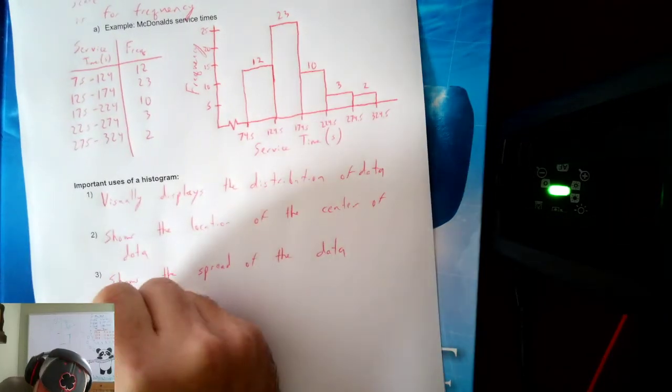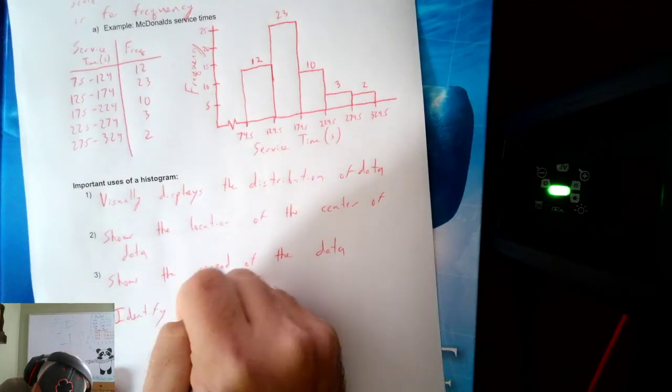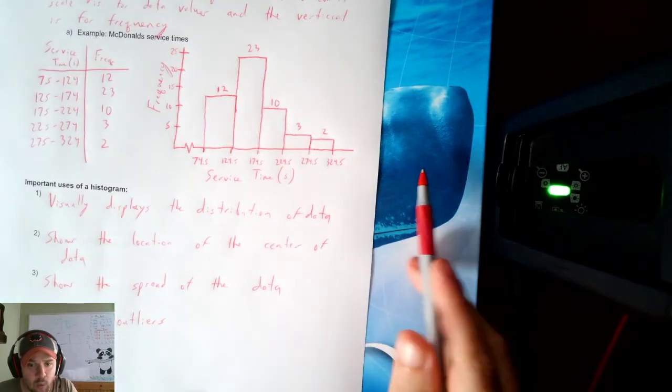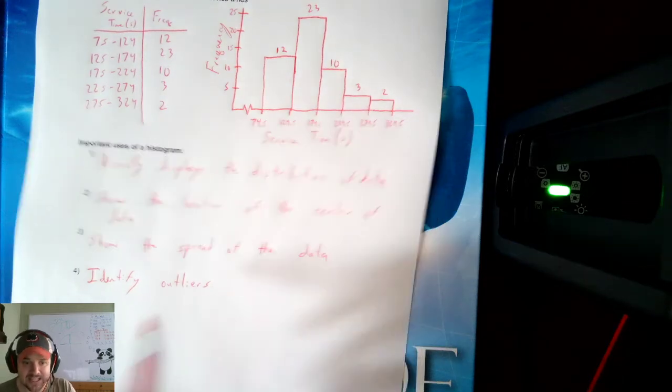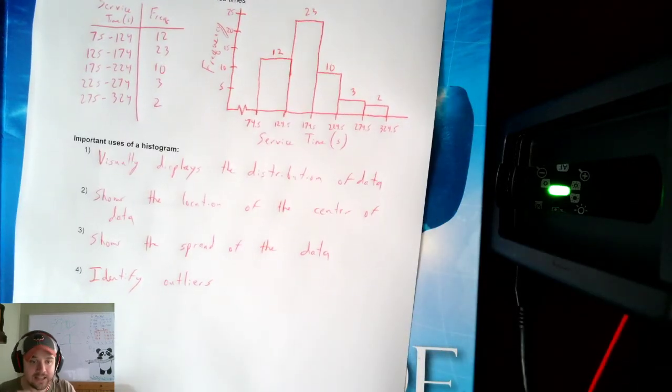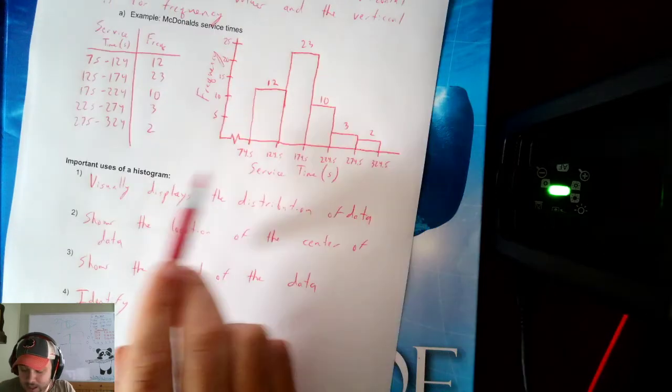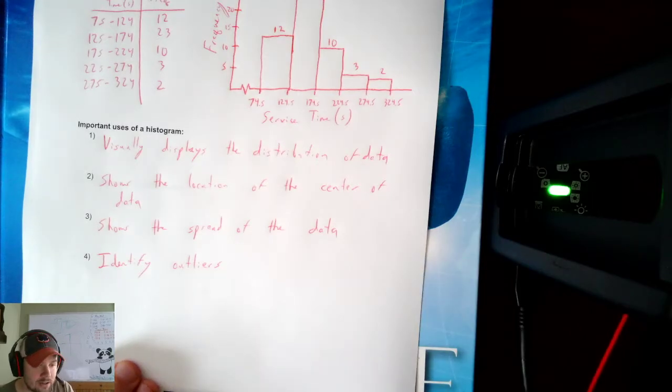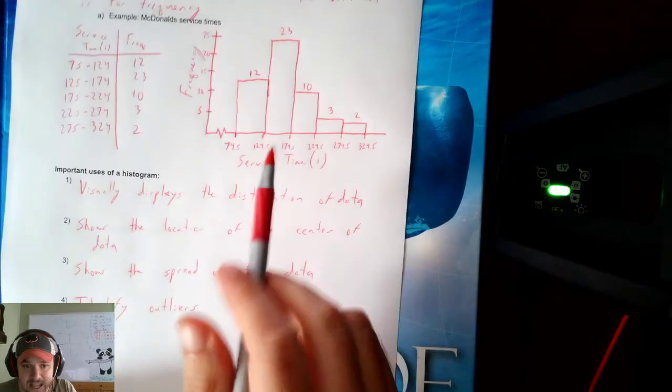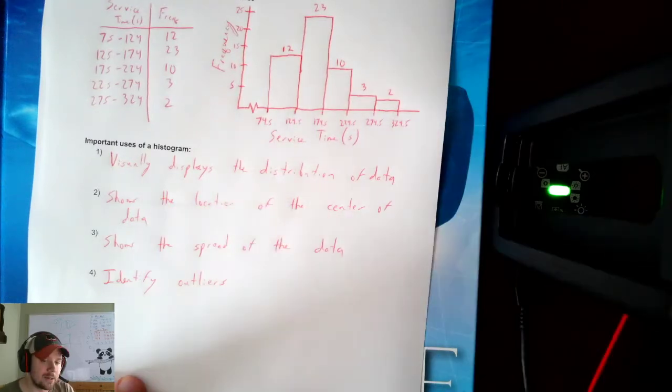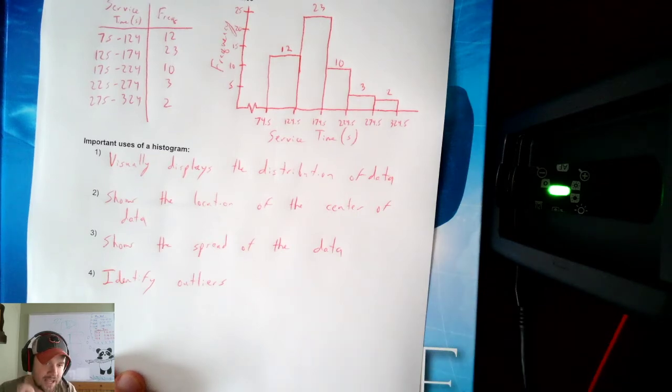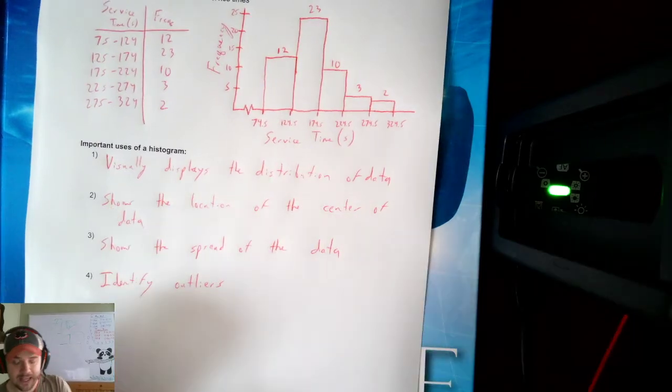It shows whether the data is spread out or all bunched up. This data is pretty bunched up right here, then there's a little bit of spread out to the right. It also can identify outliers. If there was one bar all alone by its lonesome way off on either end, that would be an outlier. So that's a histogram, and it has a couple uses. The biggest one is it visually displays the data. It's a nice graphical picture of the data.